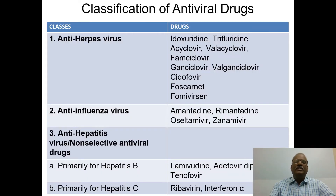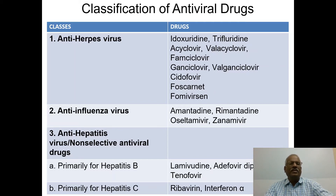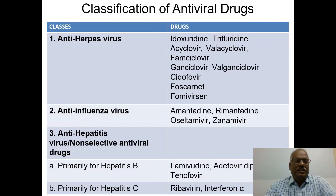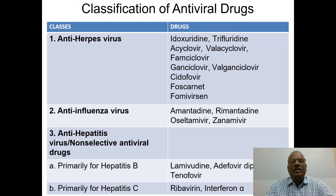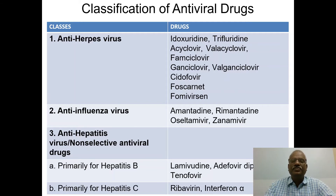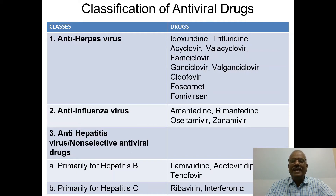Now we will discuss the classification of antiviral drugs — groups of drugs acting against particular viruses. First, antiherpes drugs, which is a very important class: idoxuridine, trifluridine, acyclovir, valacyclovir, famciclovir, ganciclovir, valganciclovir, cidofovir, foscarnet, and fomivirsen — all drugs active against herpes virus.